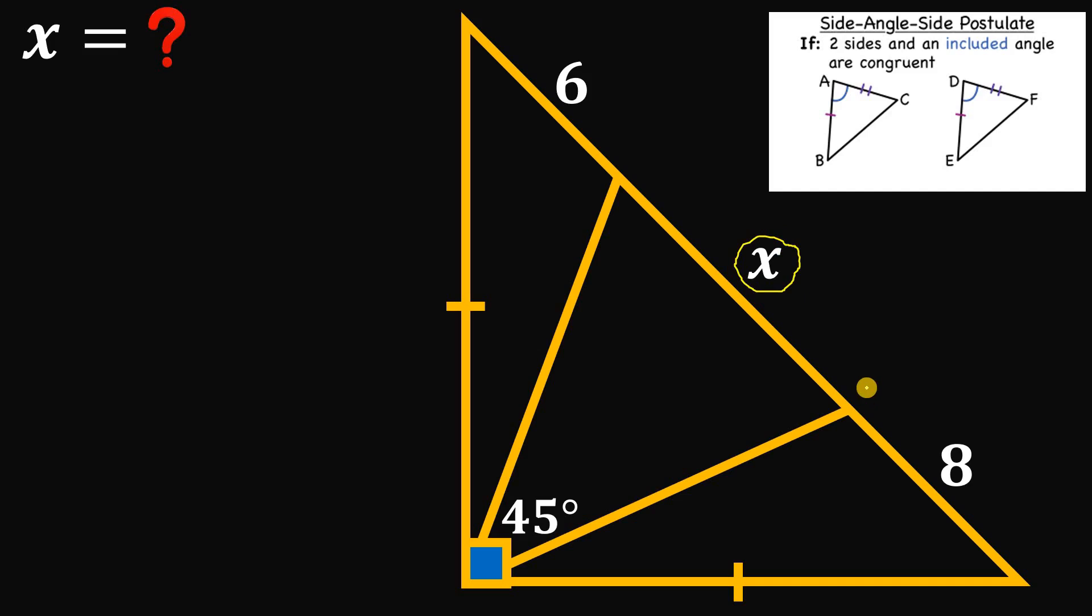Now we'll use the given information. We have an isosceles right triangle, so all acute angles are 45 degrees. Let's call this angle alpha and this angle beta. Take note: alpha plus beta equals 45 degrees because this angle measures 90 degrees. We will use this concept later.